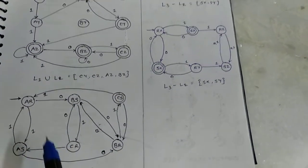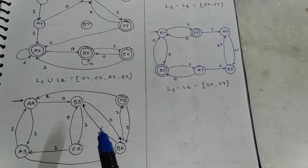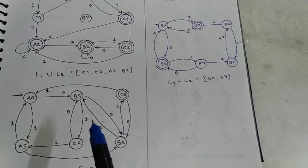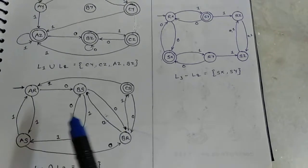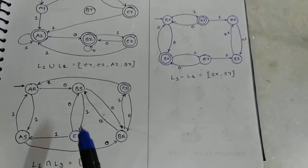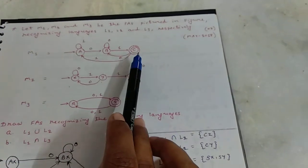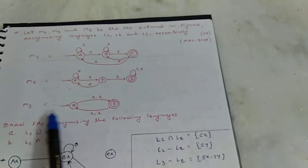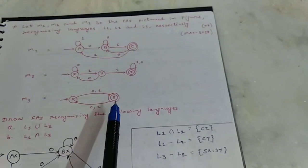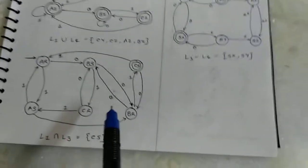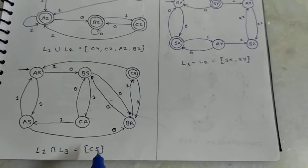Thus draw all the 0 and 1 for the visited states. For L1 intersect L3, final state is in L1, final state is C and in L3, final state is S. So for this automata, final state is CS.